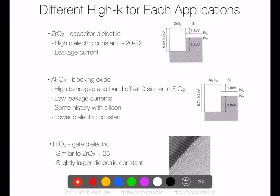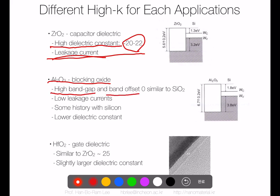There are three common high-k materials for each application. For DRAM capacitor dielectric, silicon oxide is used due to its good dielectric constant and low leakage. For NAND flash blocking oxide, aluminum oxide is used due to its very high band gap and near-zero band offset to silicon oxide, with low leakage current. For gate dielectric, hafnium oxide is used due to its high k value and acceptable band gap.